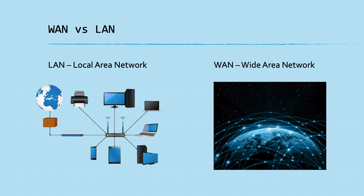A wide area network allows public resources to communicate with other public resources. On a local area network you might have your printer, phone, and laptop. A wide area network might include Facebook, Google, Amazon, or Netflix — things that are publicly available. A local area network can only be accessed if you are on that network, whereas wide area network resources can be accessed from anywhere.